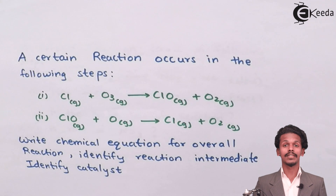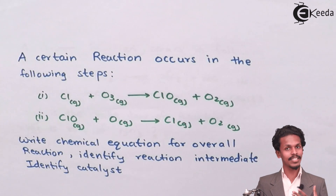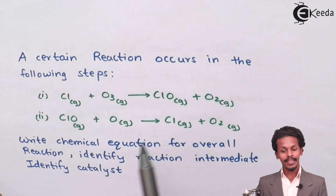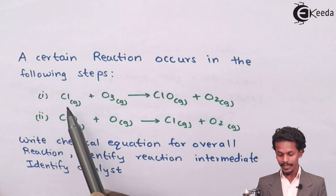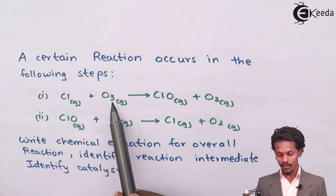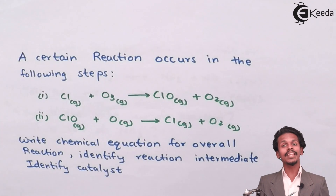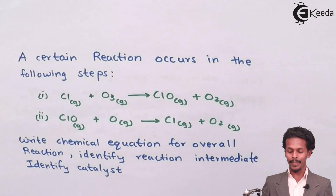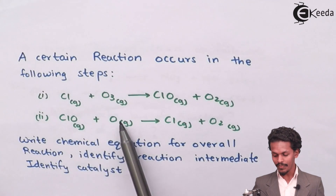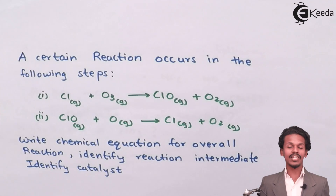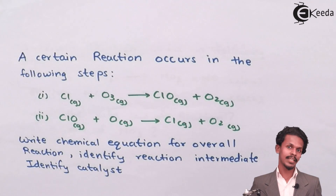On your screen, a two-step reaction is mentioned. Step one: Cl + O3 (ozone) gives ClO + O2. Step two: ClO + O gives Cl + O2. These are the two steps of the given reaction.